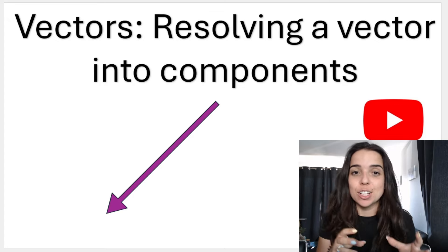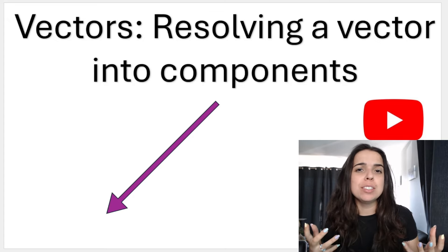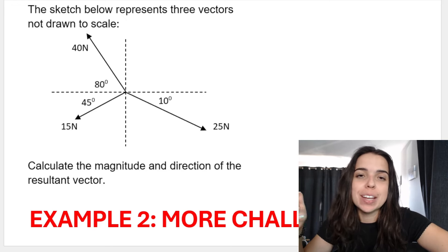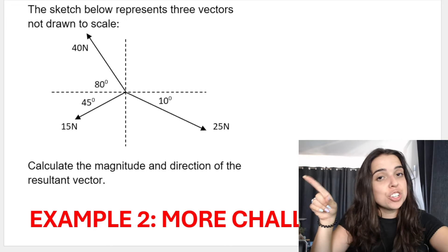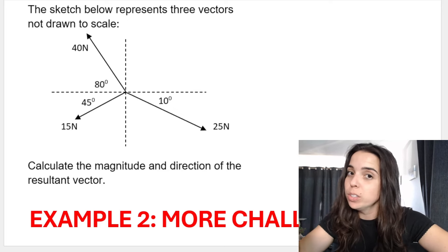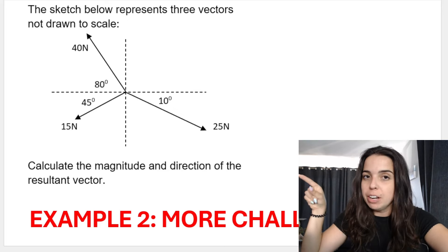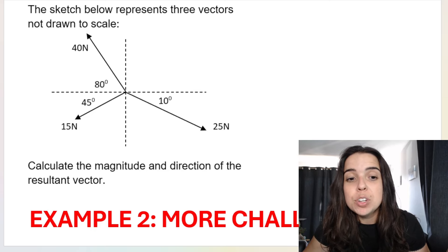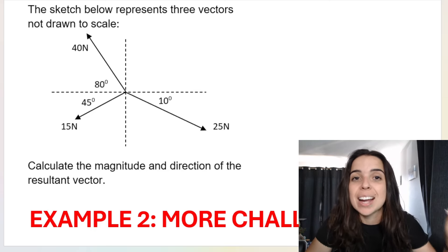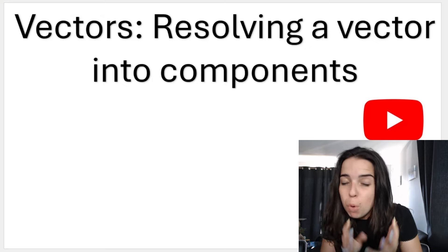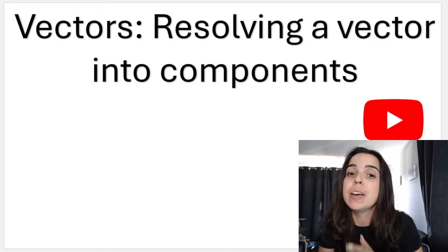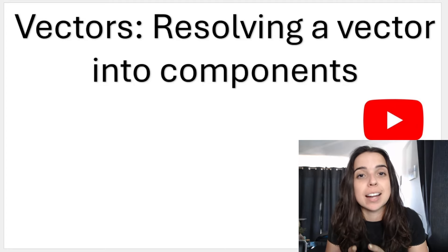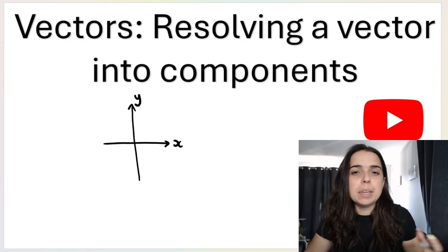When do we resolve a vector into its components? How do you know when to do this and why is it necessary? We need to know how to resolve a vector, or break a vector down into its components, if you are asked to work out the resultant or net vector. What is very clear from this diagram is that all three vectors — the 40 Newton, the 25 Newton, and the 50 Newton — are all acting at an angle. So the most important thing to know is that we resolve a vector into components when the vector is acting at an angle.